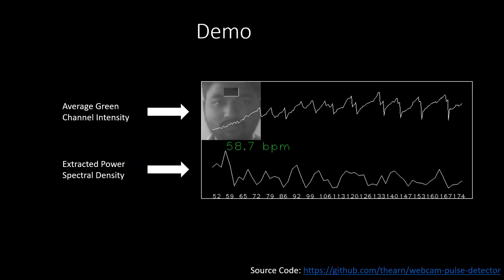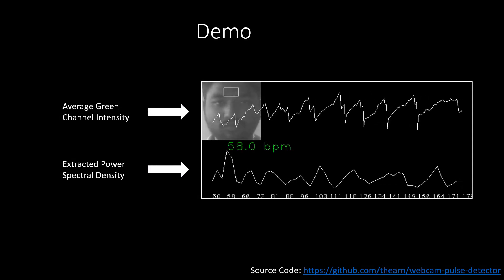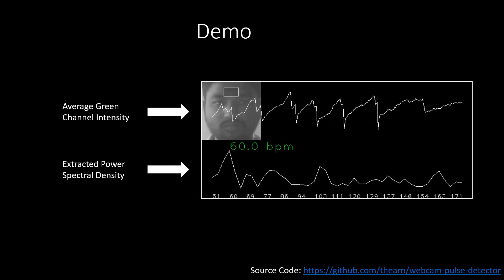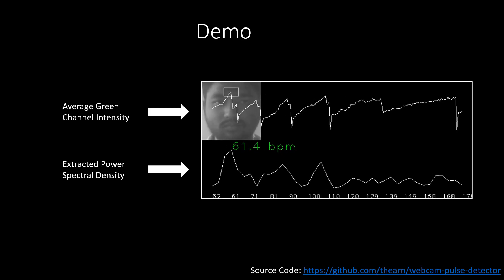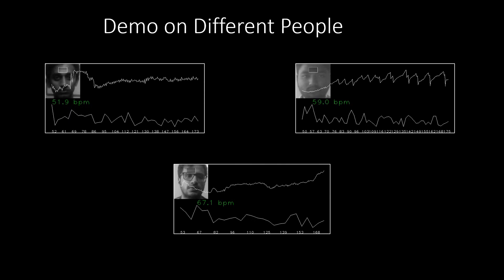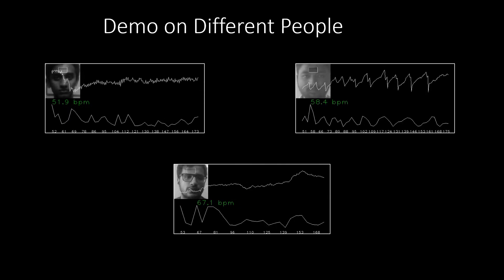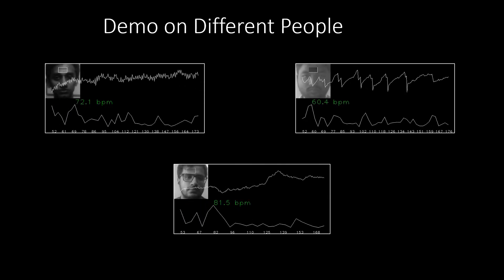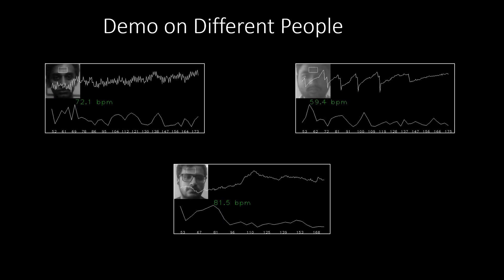A demo of the stated procedure is shown. The top row illustrates the average green channel intensity stored in the buffer and the next row shows its corresponding power spectral density. Testing this procedure on different subjects, the heart rate differed from person to person, encouraging its utility as a soft biometric.